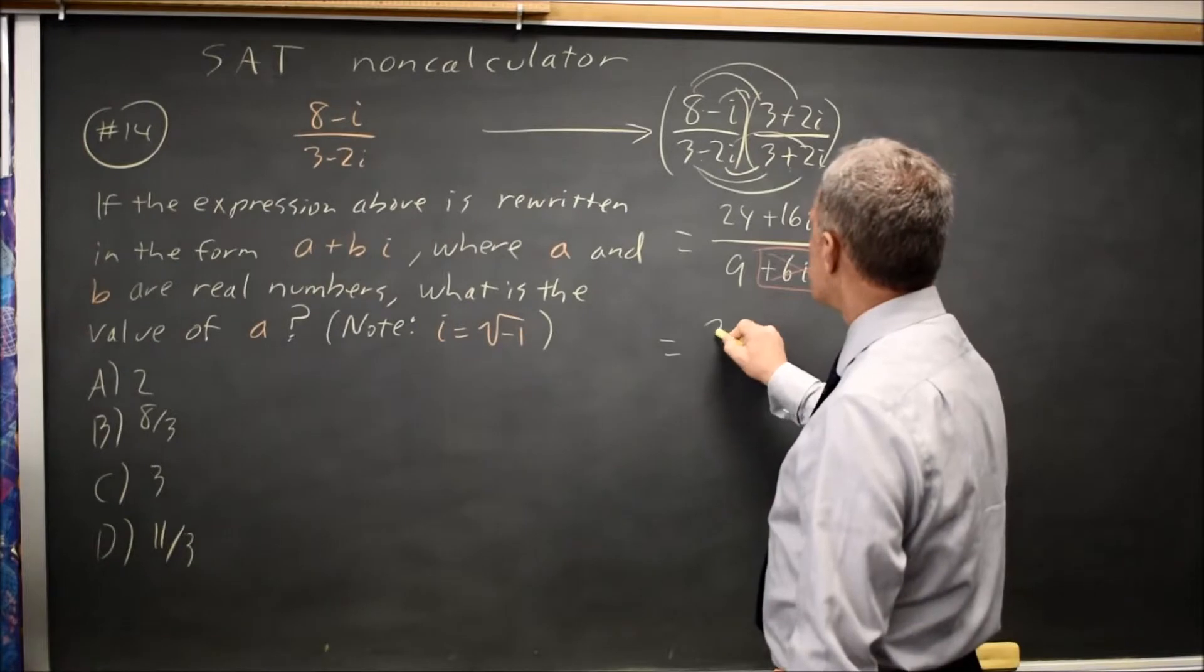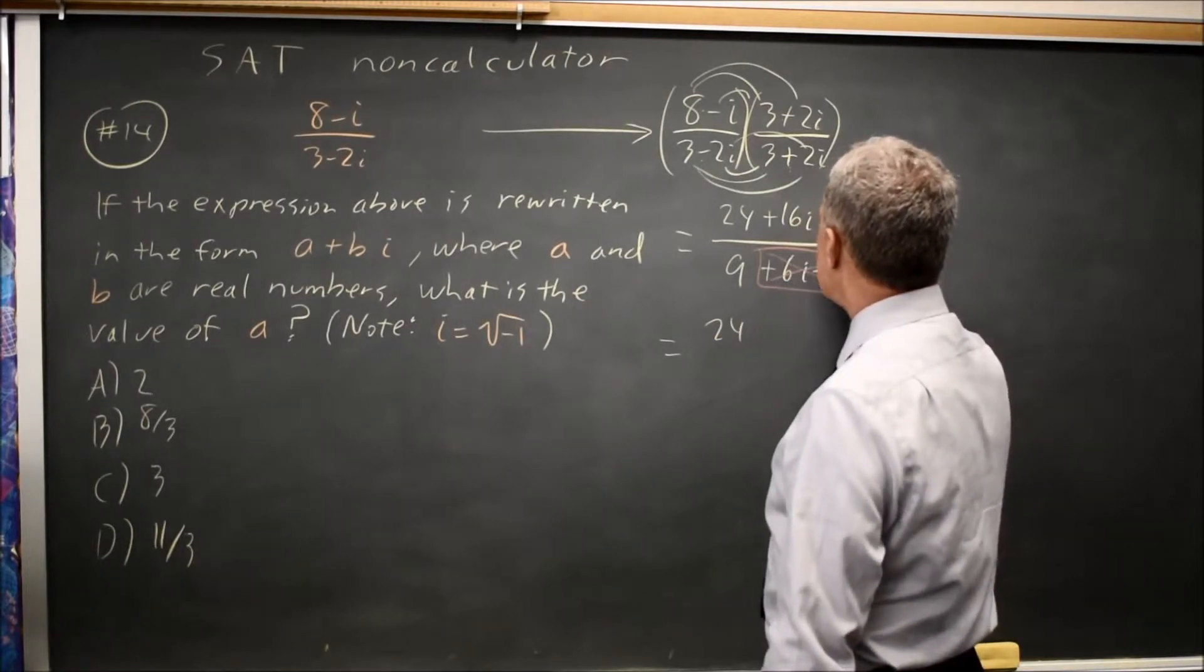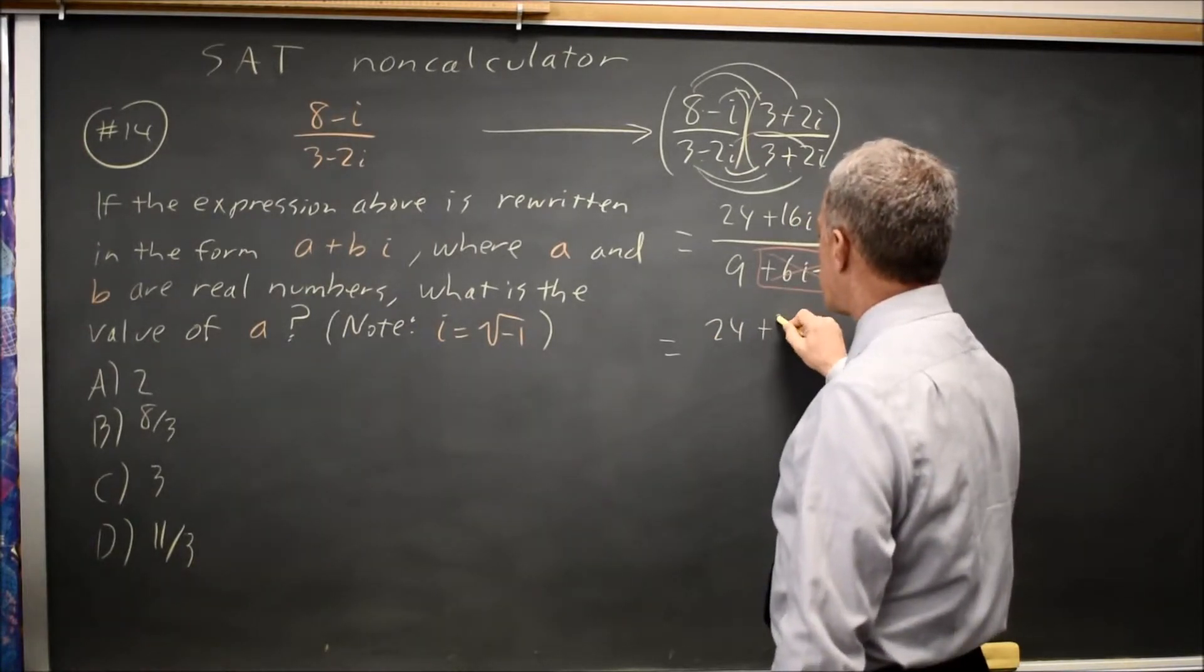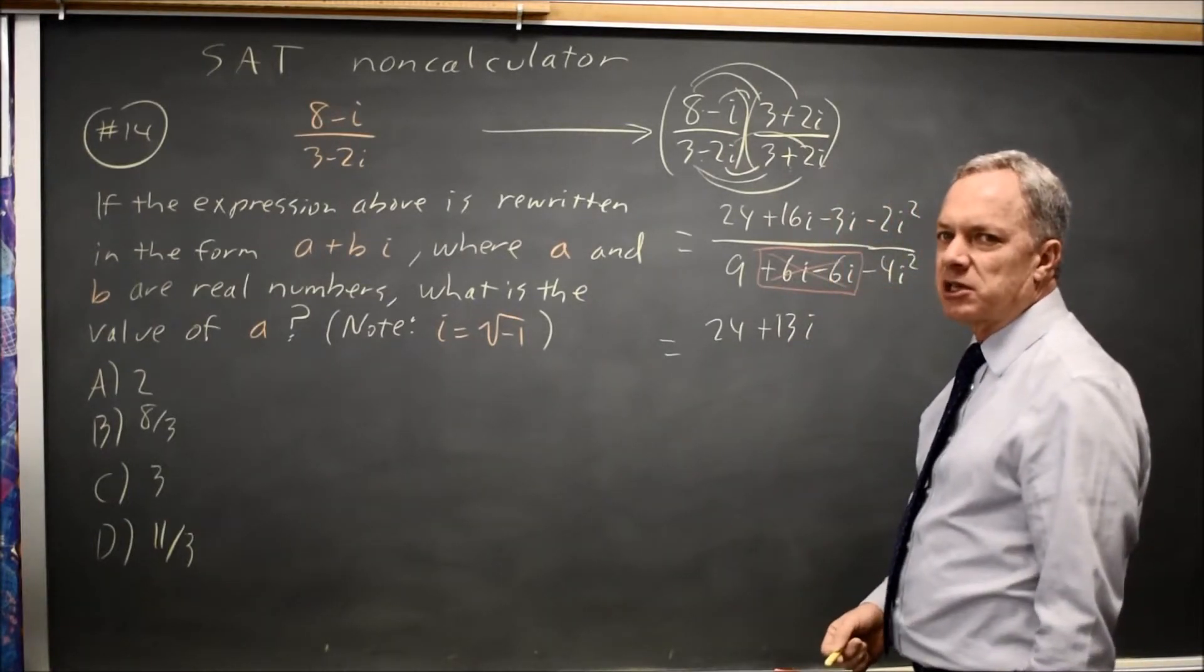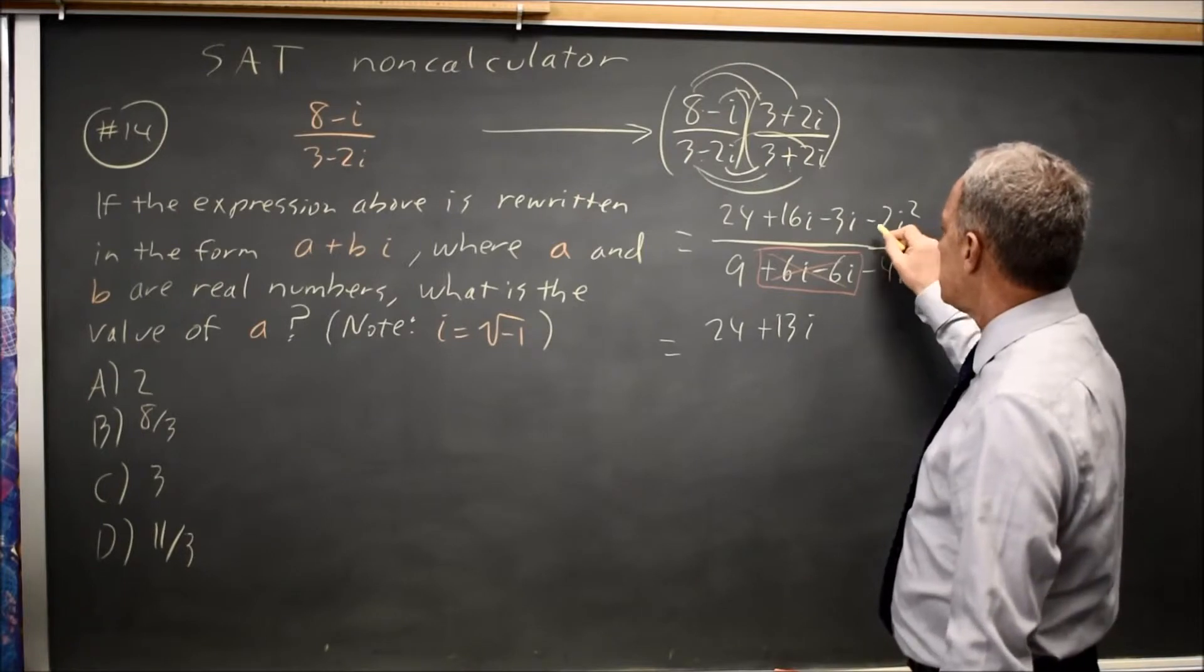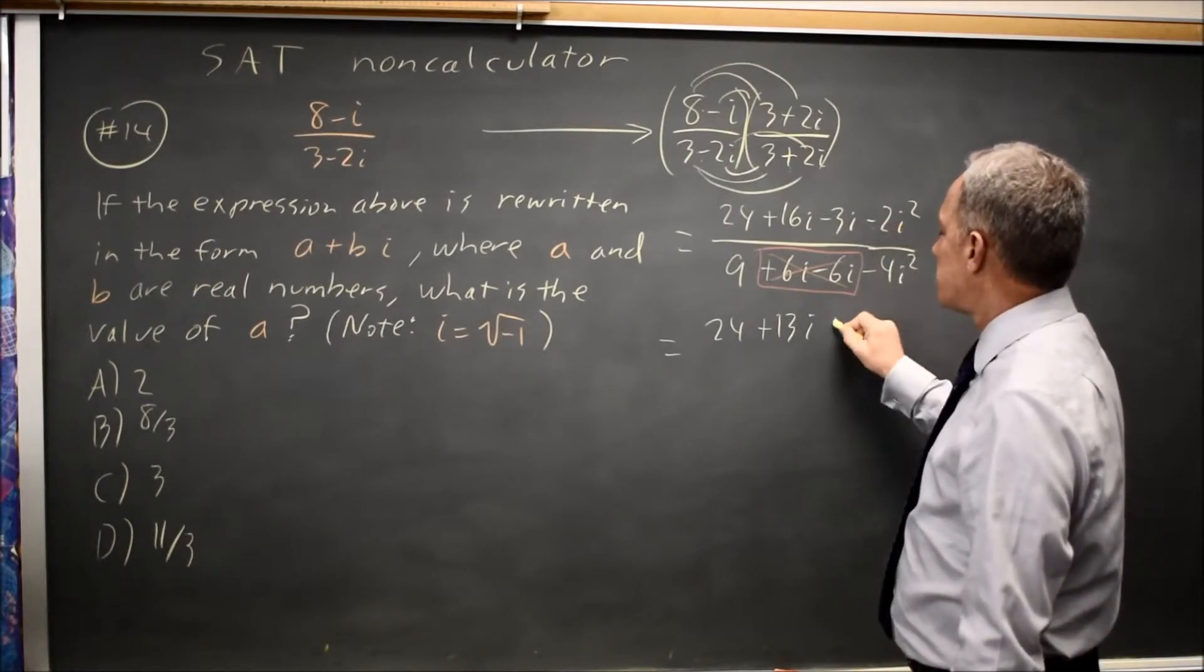Simplifying the numerator, that's 24, 16i minus 3i is positive 13i, negative 2i squared is negative 2 times i squared where i squared is negative 1. So negative 2 times negative 1 is positive 2.